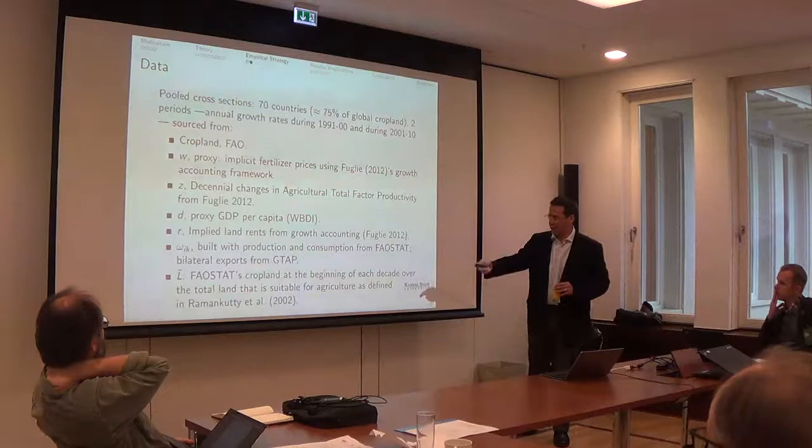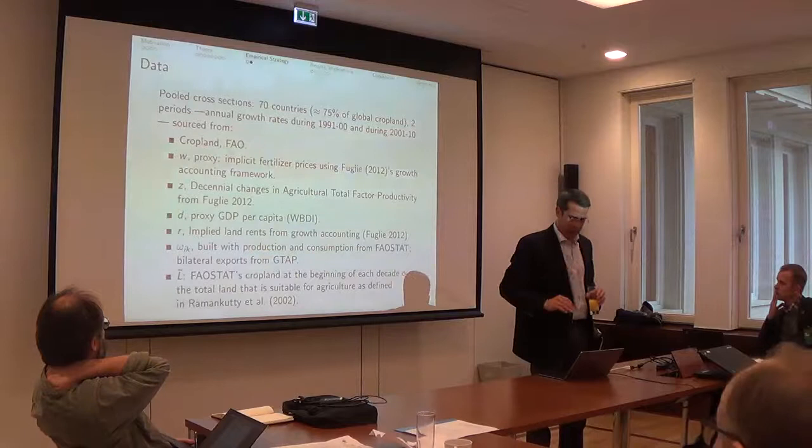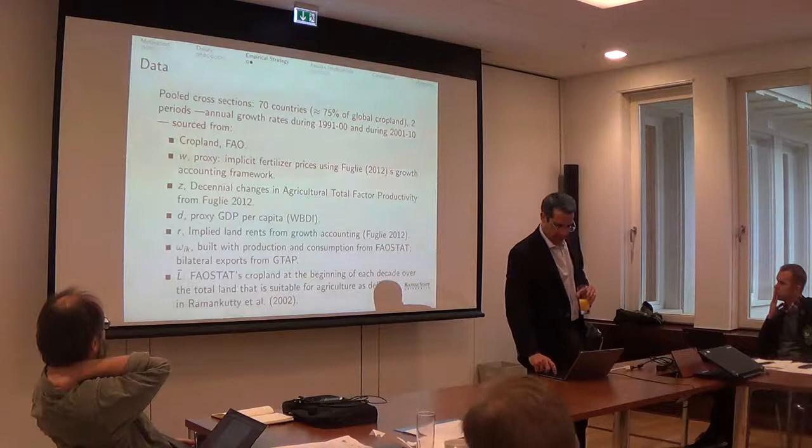We proxy changes in demand by GDP per capita. The land rents are also from the growth accounting framework using FAO data. And the competition indices are built using production and consumption from FAO stats and bilateral exports from the GTAP database. And Lbar, this variable, is basically cropland at the beginning of the period divided by land suitable for agriculture, the index built by Ramankutty and collaborators.